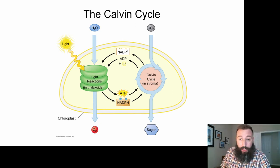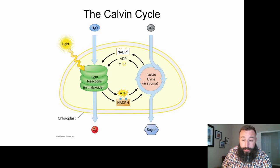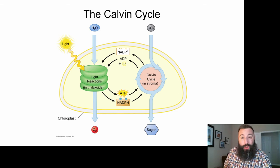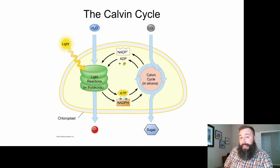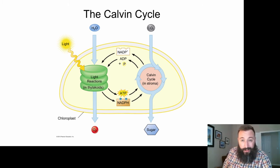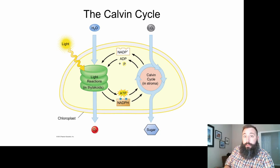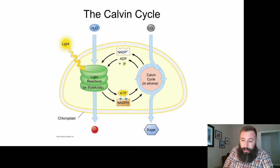The Calvin Cycle happens in the chloroplast — but where specifically? There are two major locations inside the chloroplast. The thylakoids, whose membranes are the location of the light reactions, and all of the other area inside the chloroplast — it's called the stroma. The stroma is made up of water, dissolved ions, hydrogen protons, and a lot of enzymes. An enzyme is a class of molecule that can do work as long as there's energy present. The energy for enzymes like Rubisco to make organic compounds and sugars comes from ATP and NADPH produced during the light reactions.